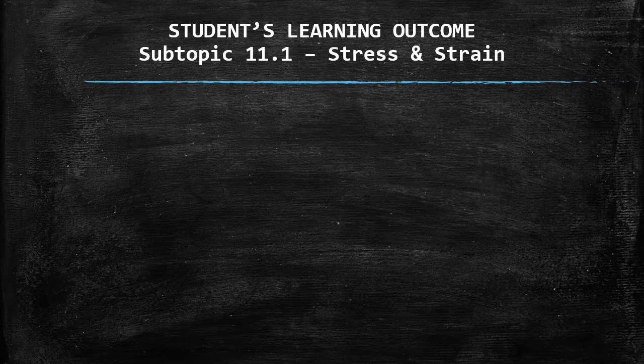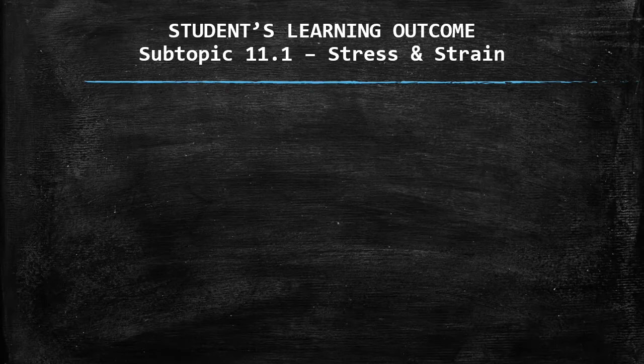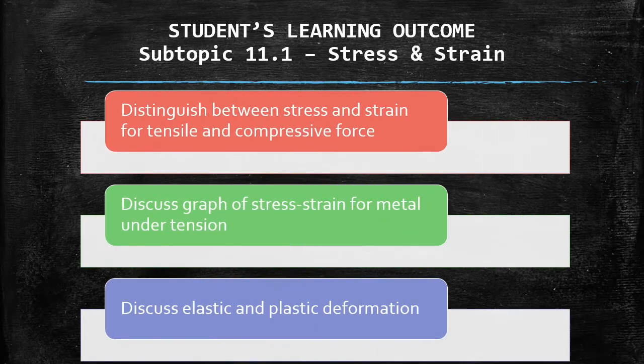Before we go further, let us take a look at student's learning outcome. We will discuss subtopic 11.1, Stress and Strain. In this subtopic, we have three things to be discussed and three things to be accomplished by students.